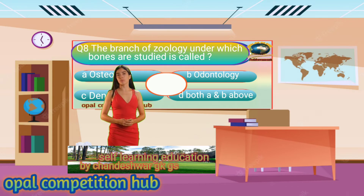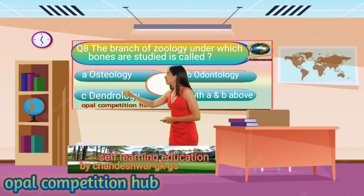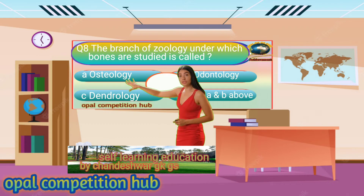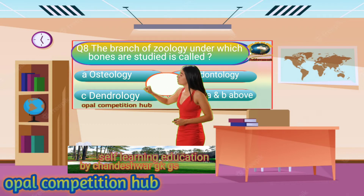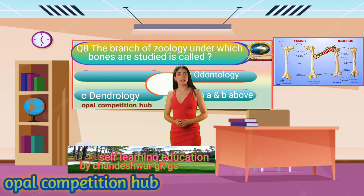Question number 8. The branch of science under which bones are studied is called. Your options are: Option A. Osteology, Option B. Odontology, Option C. Pedology, Option D. None of these. Your answer will be Option A. Osteology.